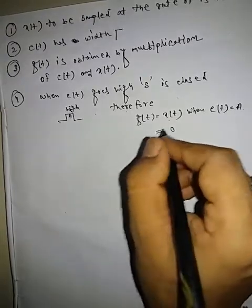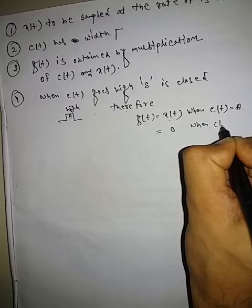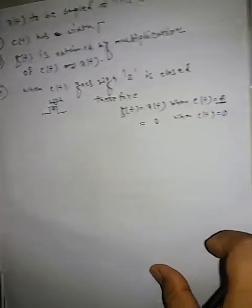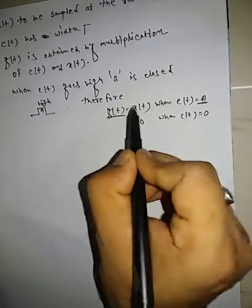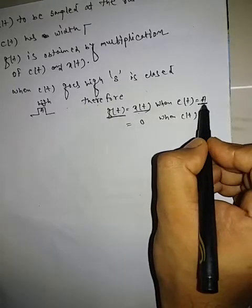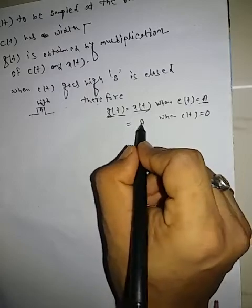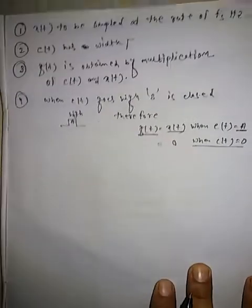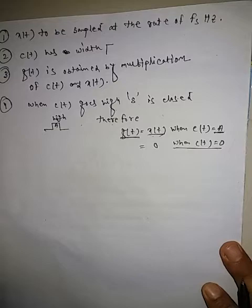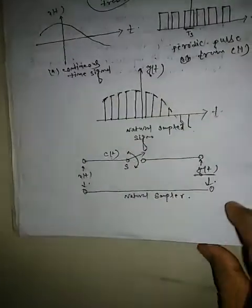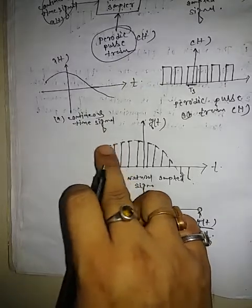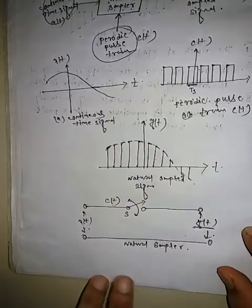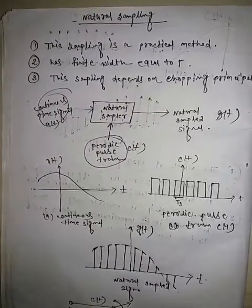GT is equal to zero when CT is zero — meaning the switch S is open. The natural sampled output has a finite width equal to Tau. This is the Natural Sampling technique.